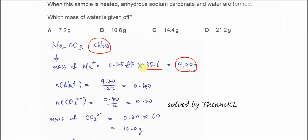And we need to convert this gram to mole. The mole of sodium ion over the atomic mass will get 0.4 mole.